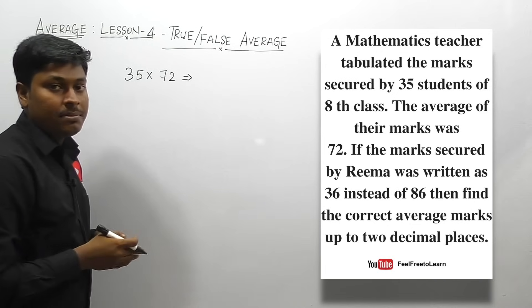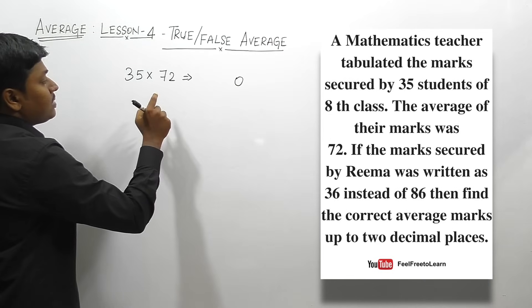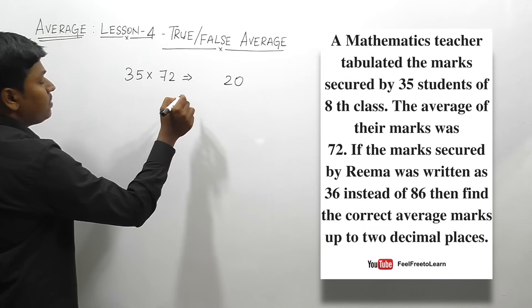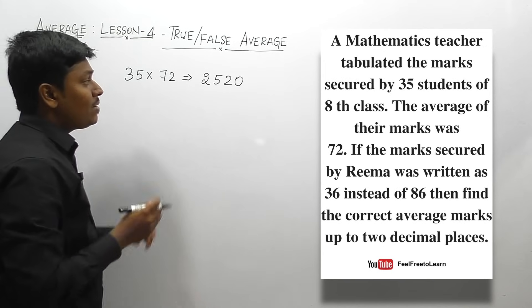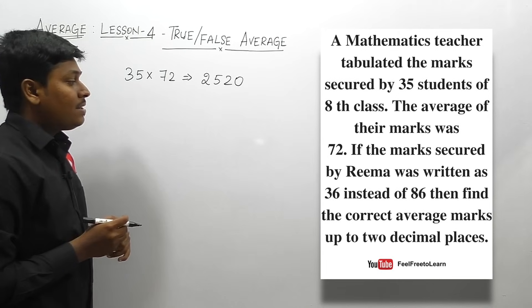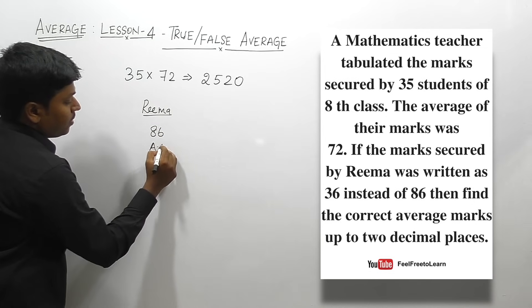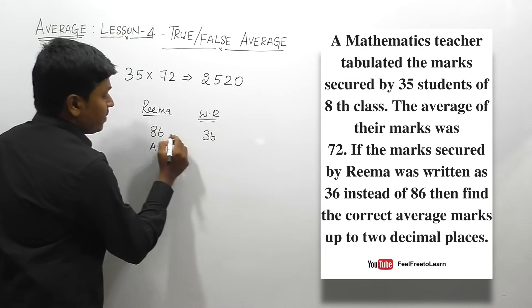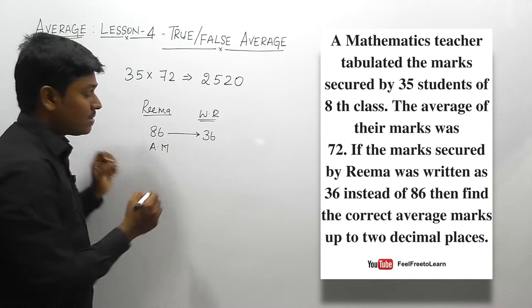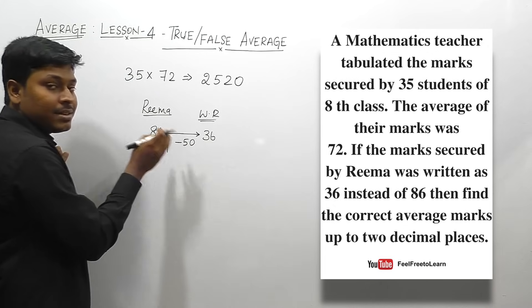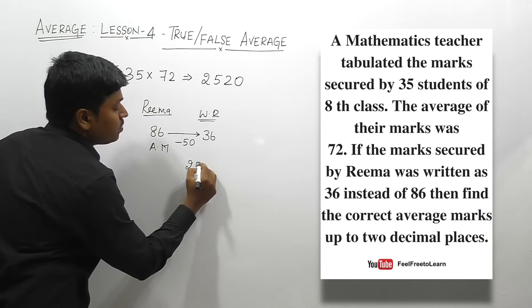35 students with average 72: 35 × 72 = 2520 total marks. Reema's actual mark is 86 but the wrong reading was 36 — that is 50 marks less than the original. So we need to add 50 to the total marks: 2520 + 50 = 2570.